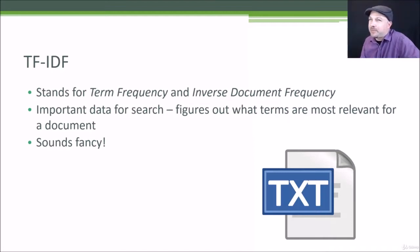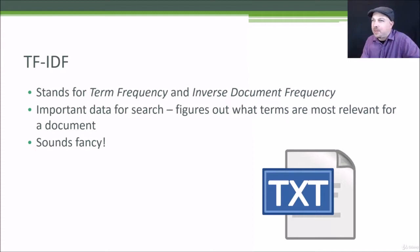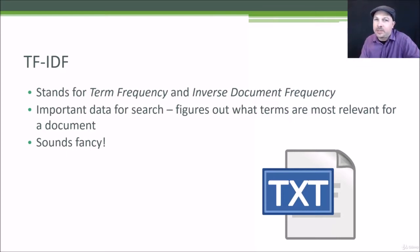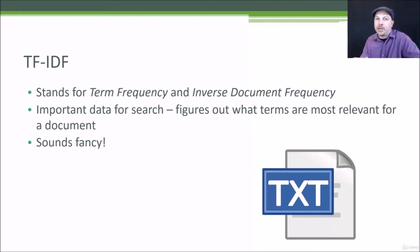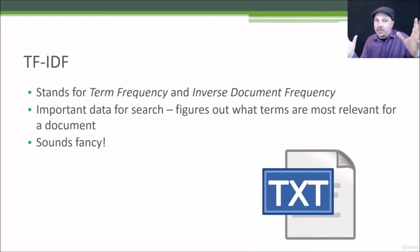TF-IDF stands for Term Frequency Inverse Document Frequency. These are basically two metrics that are closely interrelated for doing search and figuring out the relevancy of a given word to a document given a larger body of documents. For example, every article in Wikipedia might have a term frequency associated with it, as could every page on the internet for every word that appears in that document.